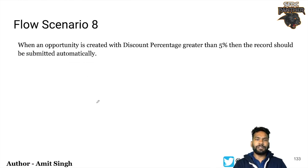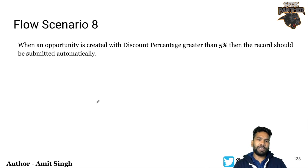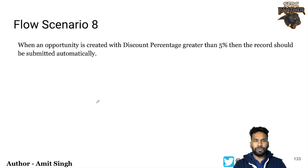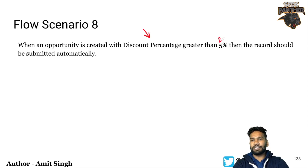Hello everyone, welcome back to SFDC Panther. My name is Amit Singh. In this video we are going to talk about another scenario related to the Flow Builder series — this is scenario number 8, related to the record trigger scenario. Whenever an opportunity is created with a discount percentage greater than 2%, the record should automatically be submitted for approval.